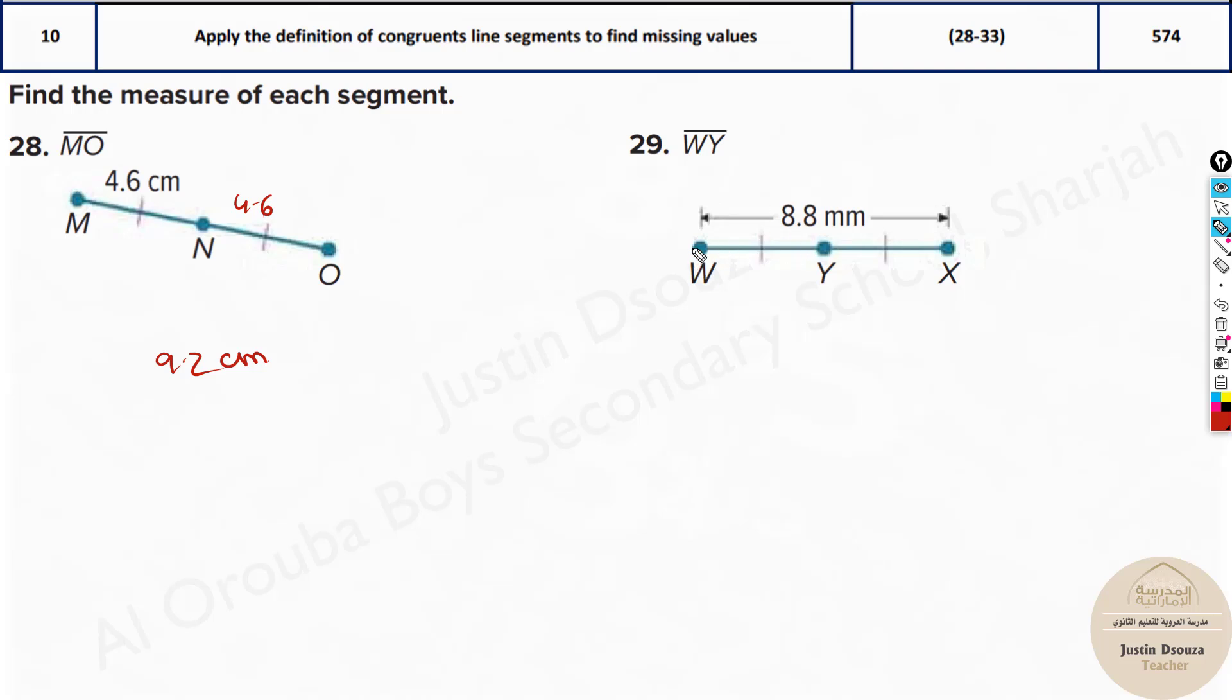Same way we have to find WY. Here the total length WX is given as 8.8 mm and how much is half of it? See this total. These both are congruent so half would be 4.4 millimeters.